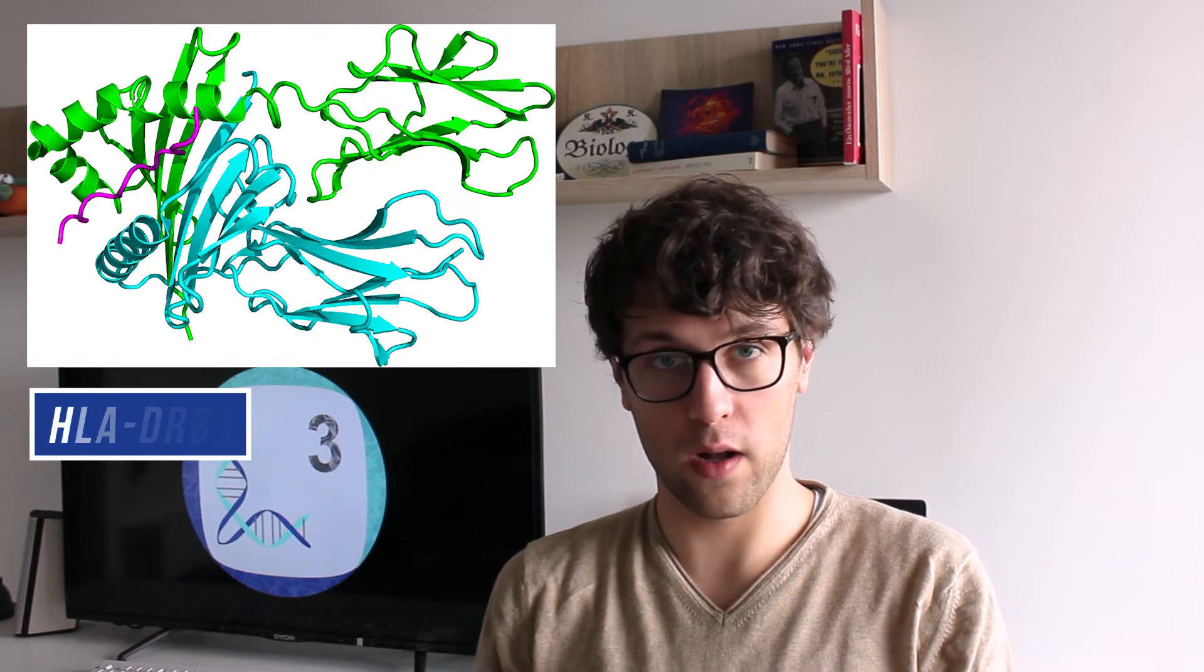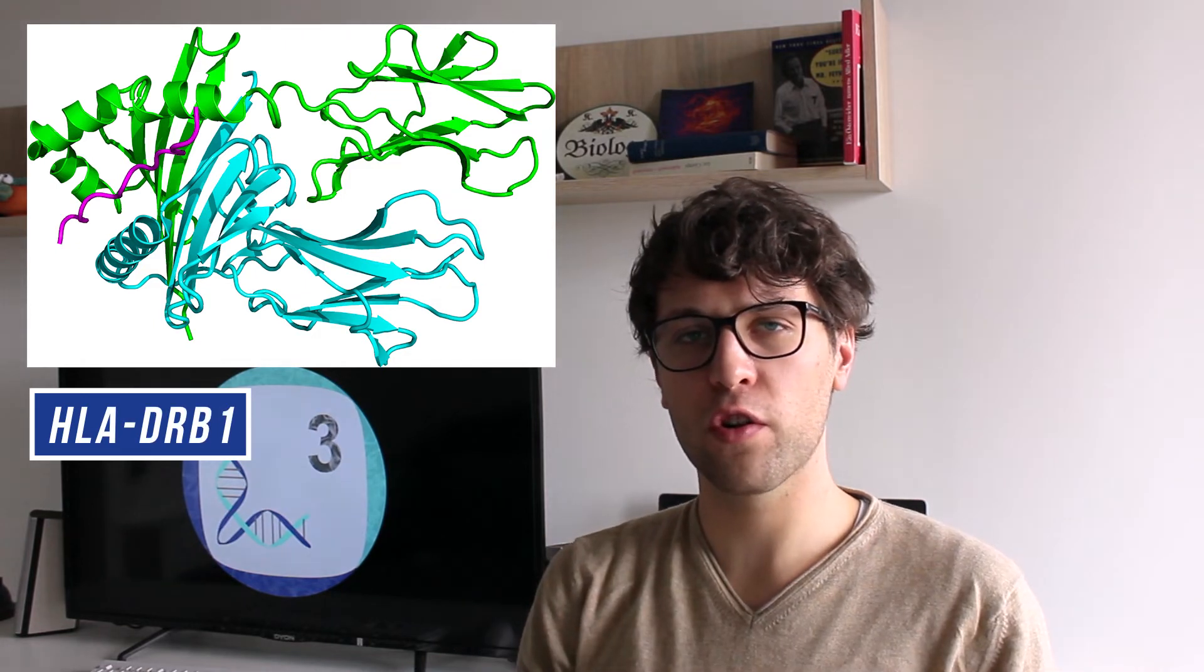And in Canada it was found that identical twins have a 25% chance of developing the disease if the other twin suffers from the condition. Therefore we know that certain genes must increase the risk of developing multiple sclerosis. And some of these genes were already identified, one of which is HLA-DRB1. This gene is involved in the recognition of body cells by immune cells and this will be very important later on.